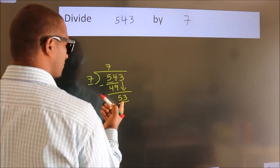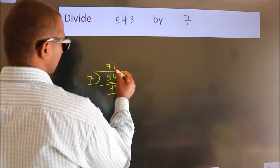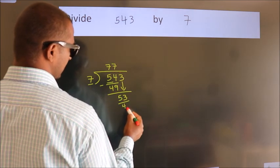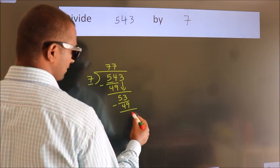A number close to 53 in the 7 table is 7 sevens, which is 49. Now we subtract and get 4.